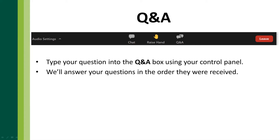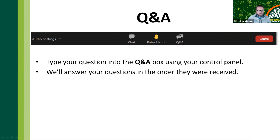Just clarifying: pesticide applicator credits should not come through the Q&A — there is a link in the chat (just above the ecoipm.org link) that says 'forms' in the web address. That's where you'd fill out information for your state pesticide CEUs. ISA CEUs go into the Q&A; pesticide CEUs go through that link in the chat and must be filled out fully.